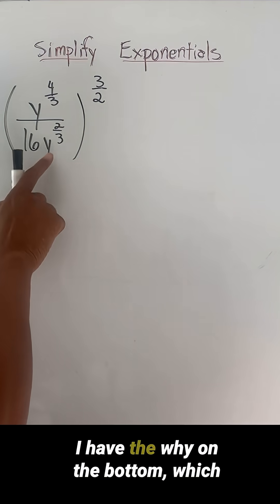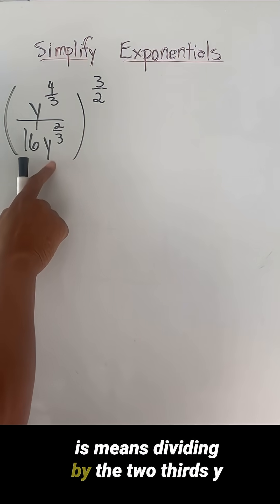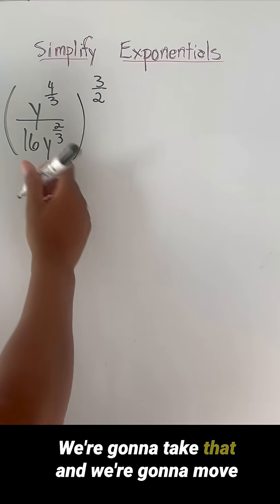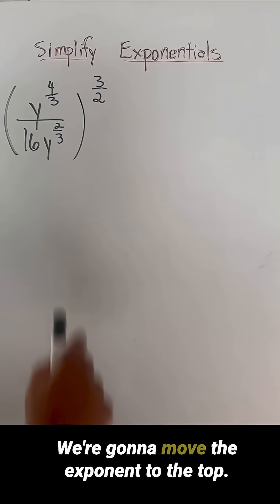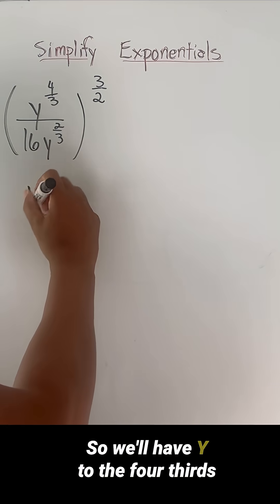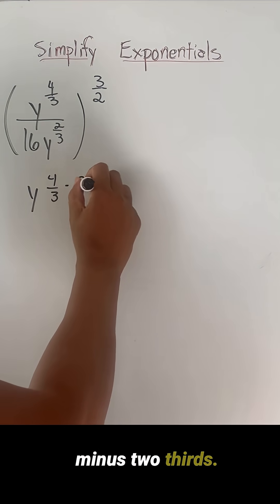Okay, so let's begin. Now I have the y on the bottom, which means dividing by y to the two thirds. We're going to take that and move that up to the top. We're going to move the exponent to the top. So we'll have y to the four thirds minus two thirds.